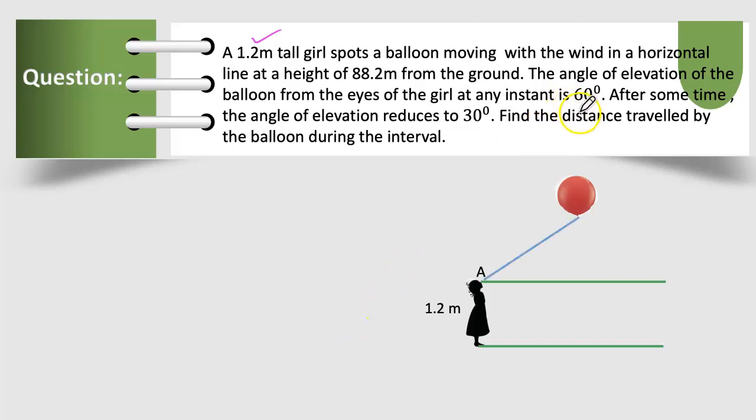The angle of elevation is given as 60°. After some time, the angle of elevation reduces to 30°. We have to find the distance travelled by the balloon during the interval.